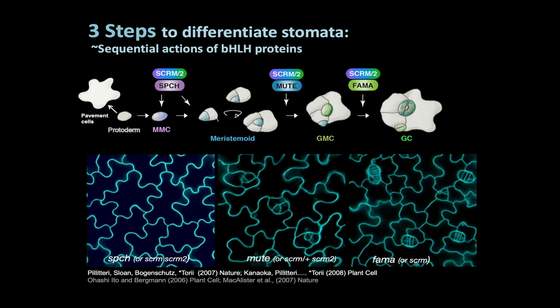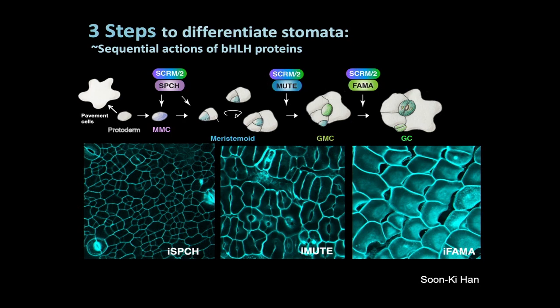If MUTE is knocked out, the meristemoid stem cell reiterates asymmetric division in a spiral manner but arrests in the middle — that's why it's called MUTE, because it doesn't make any mouth. And if the last step, FAMA, is knocked out, the immediate precursor of the guard cell called the guard mother cell (GMC), instead of dividing once symmetrically, divides multiple times symmetrically to make caterpillar-like tumors. Because these are master regulators, ectopic overexpression can convert cell types: SPEECHLESS overexpression makes many small stomatal lineage cells, MUTE overexpression makes a stomata-only epidermis, and FAMA overexpression produces a cute fish-scale-like singular guard cell structure.